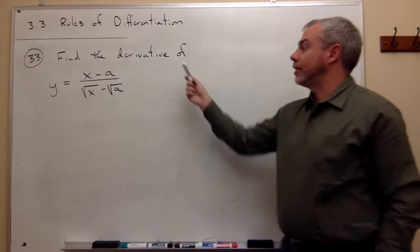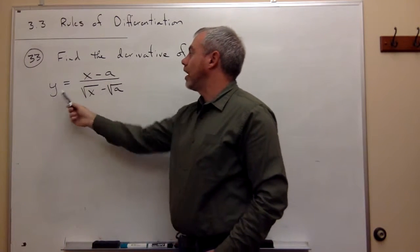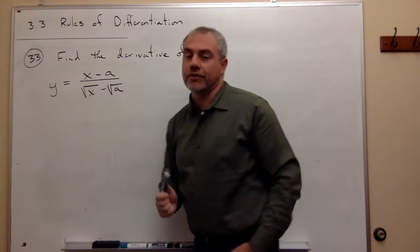Now let's look at problem number 33. In problem number 33, I'd like to find the derivative of y equals x minus a over the square root of x minus the square root of a.